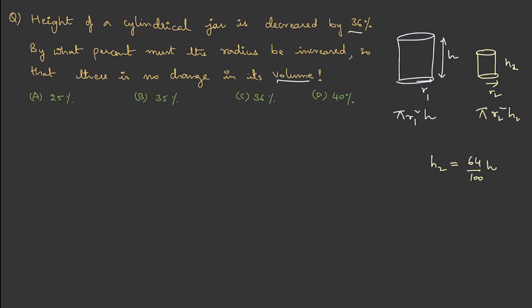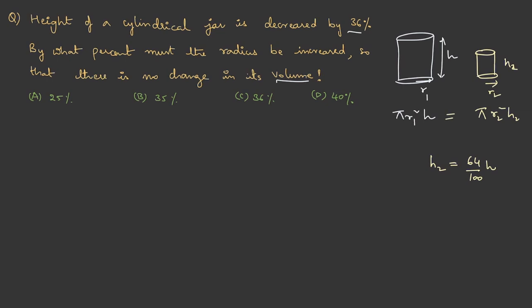It is given that volume has to be equal. That means, these two should be equal. If I substitute the values, pi r1 square h is equal to pi r2 square h2. Pi can be cancelled. We are left with r1 square h is equal to r2 square, 64 by 100 into h. We can cancel the h then we are left out with r1 square and r2 square.